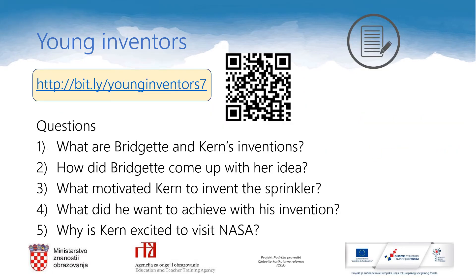In today's lesson you will watch a video about two young inventors and their inventions. While watching the video, answer these questions in your notebooks: What are Bridget and Kern's inventions? How did Bridget come up with her idea? What motivated Kern to invent the sprinkler? What did he want to achieve with his invention? And why is Kern excited to visit NASA? Now copy this link into your browser — bit.ly/younginventors7 — or scan the QR code and start watching.